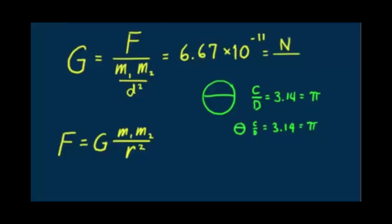We see force in newtons, masses in kilograms, kilogram squared actually, and d squared in meters squared. So the units of G are Newton meters squared per kilogram squared.